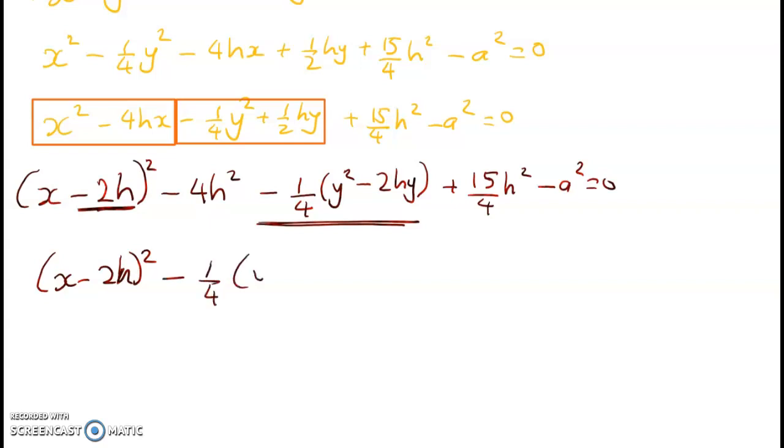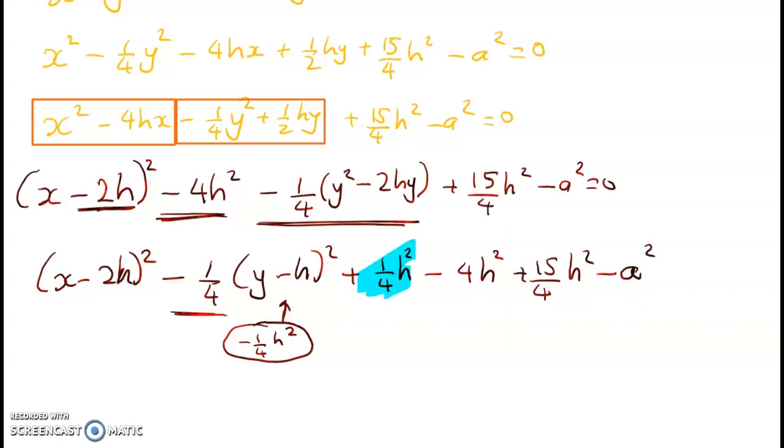Now we want to be a bit careful here with the completing the square because we've added in an h squared but we've timesed it by negative a quarter, so this time we've accidentally taken out that and we have to pop that back in. So we get plus one quarter h squared, and we've got this sitting here that needs to come in: minus 4h squared plus 15 over 4h squared minus a squared. We can clean some of this up because in here we've got one quarter and 15 quarters - 16 quarters is plus 4h squared and here we've got minus 4h squared and that whole thing equals zero.